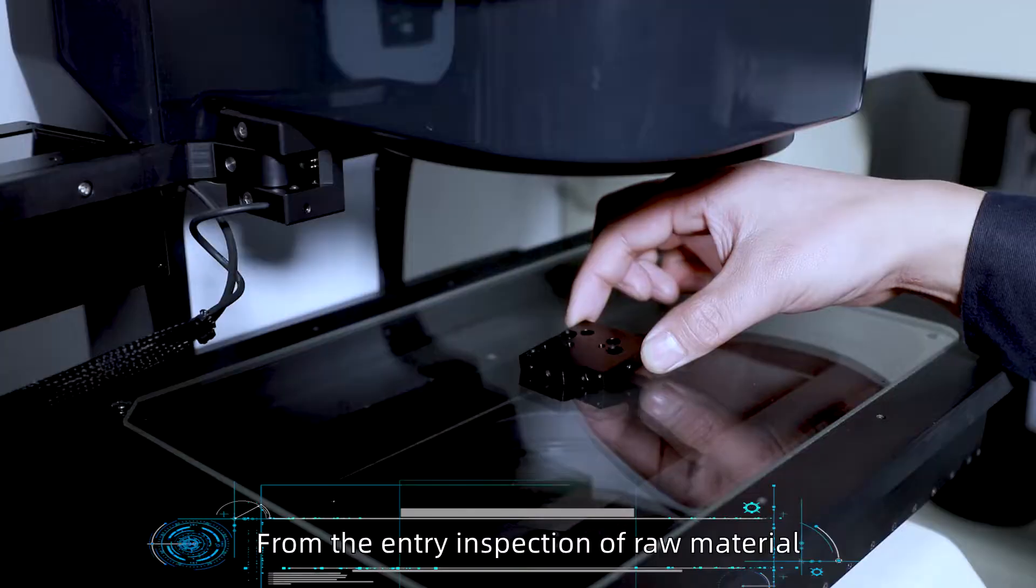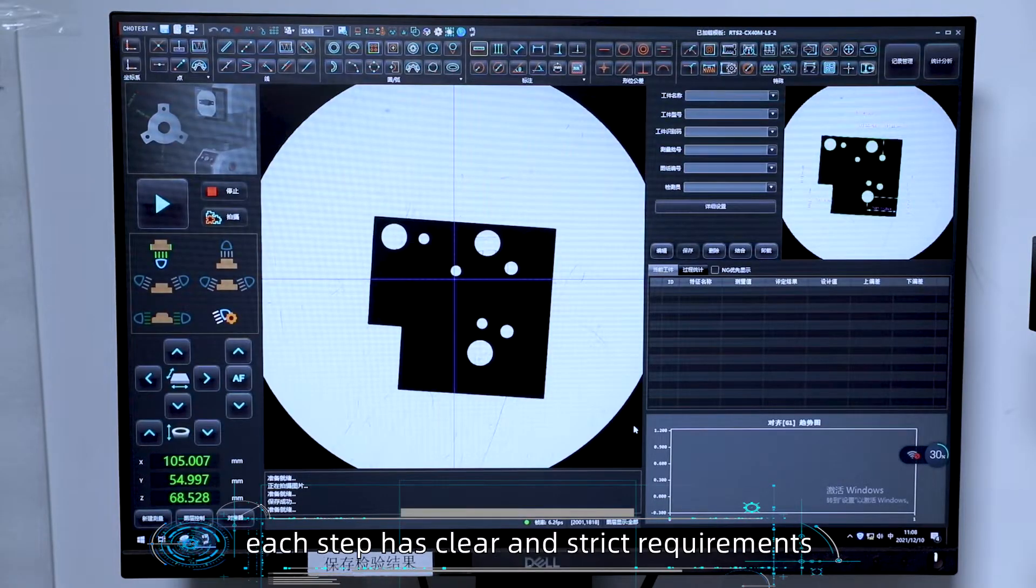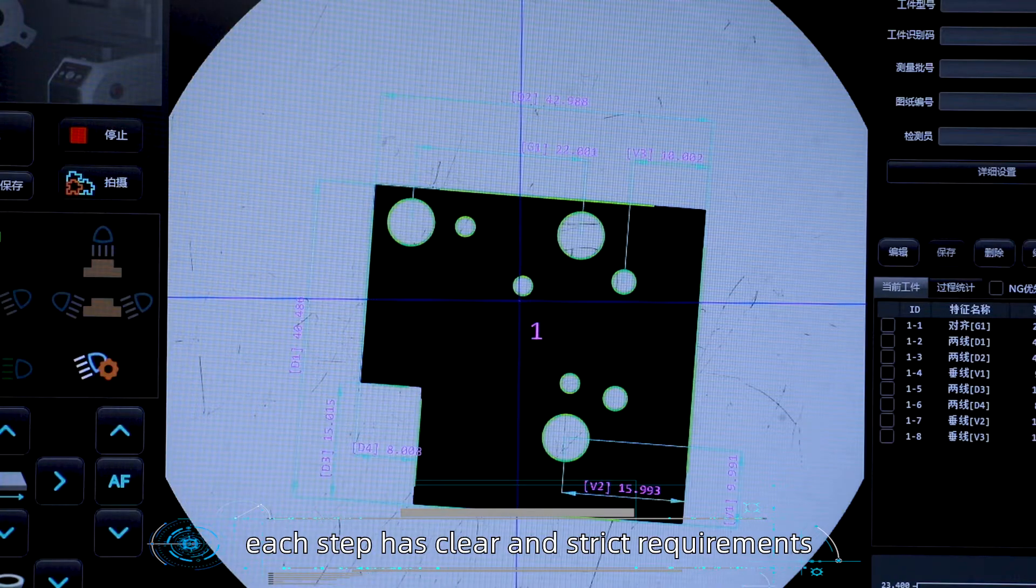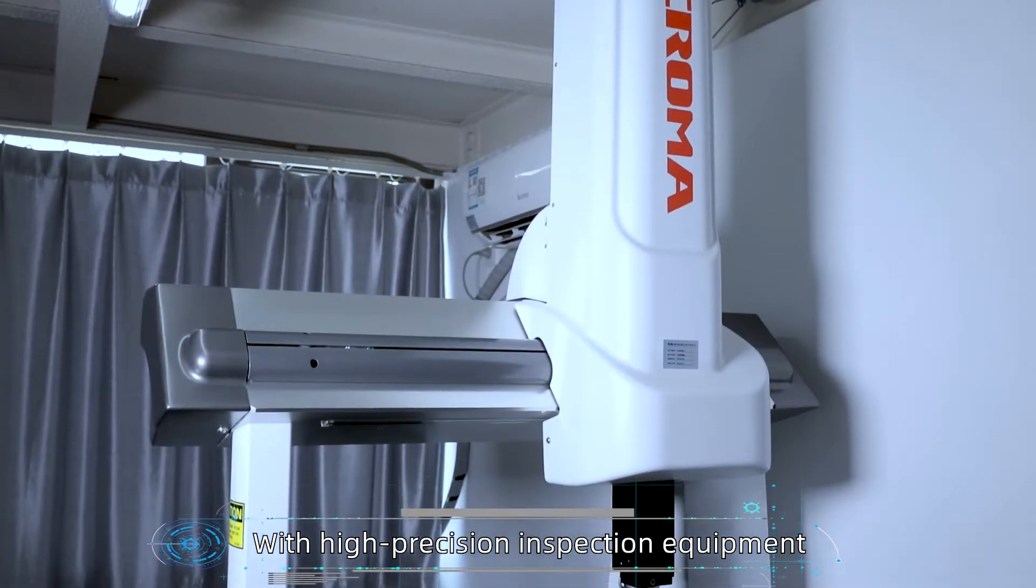Zolix has established a set of strict quality control systems from the entry inspection of raw materials to the inspection of products. Each step has clear and strict requirements.